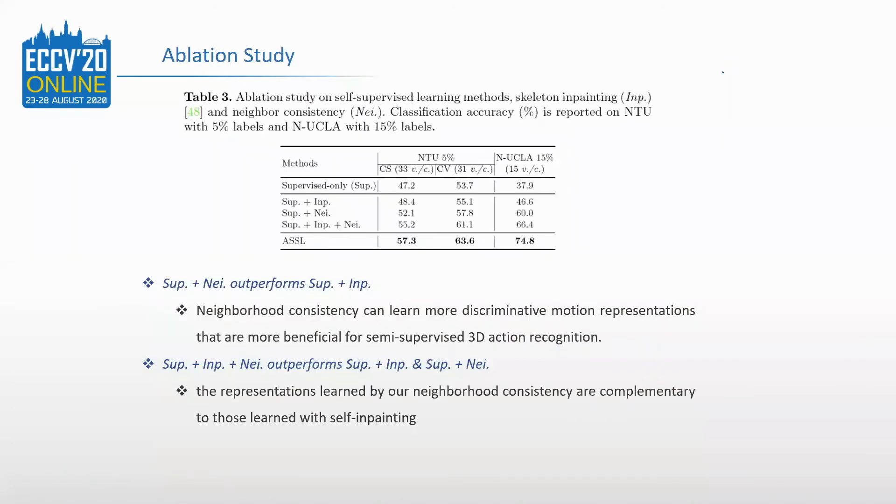This is an ablation study. We analyzed the effects of self-supervised learning in table 3. Neighborhood consistency can learn more discriminative motion representations that are more beneficial for semi-supervised 3D action recognition, and the results prove that the features learned by our neighborhood consistency are complementary to those learned with skeleton inpainting.